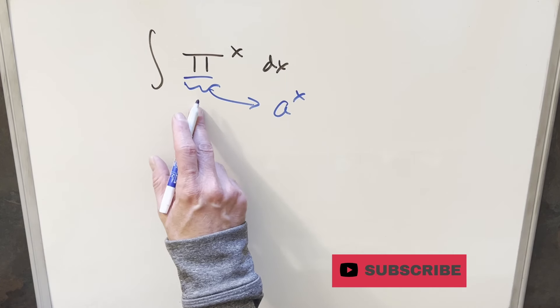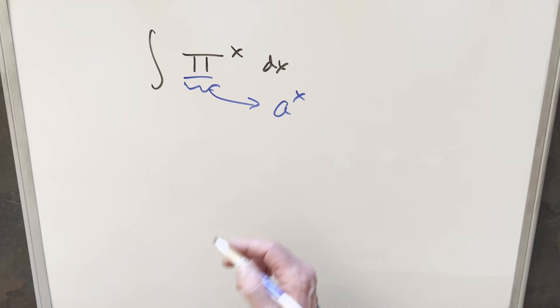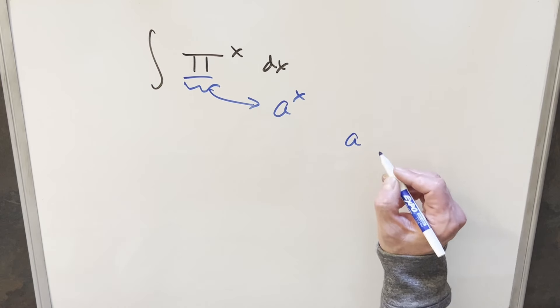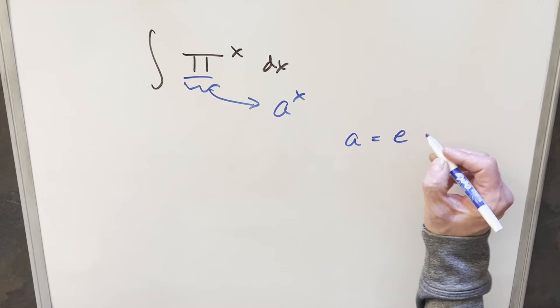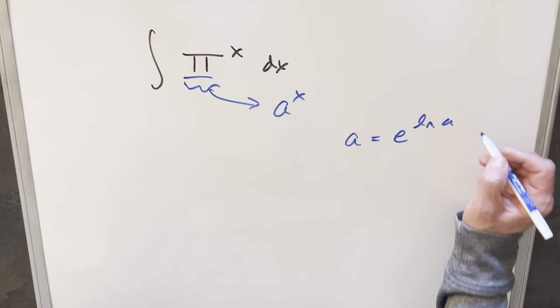I think I did one recently with 2024 to the x, because regardless of what this base is, we want to convert it to e. So for whatever our base is a, we want to rewrite it as e ln a.